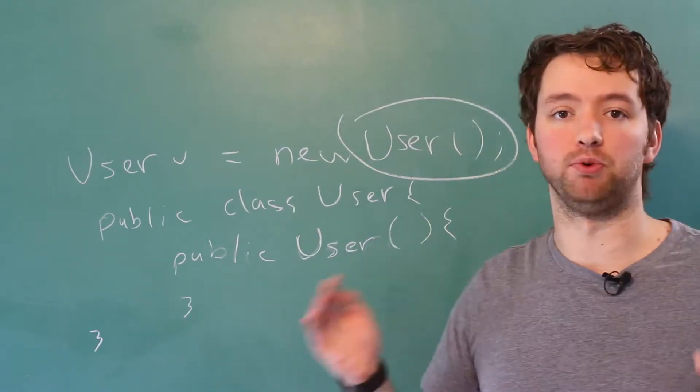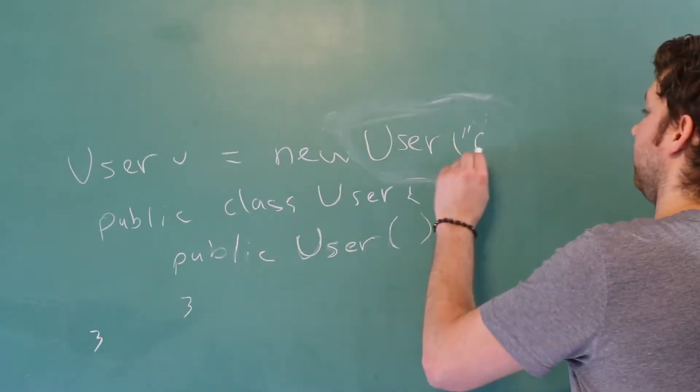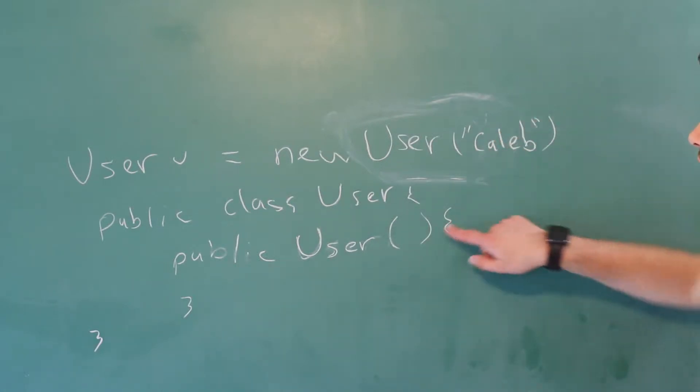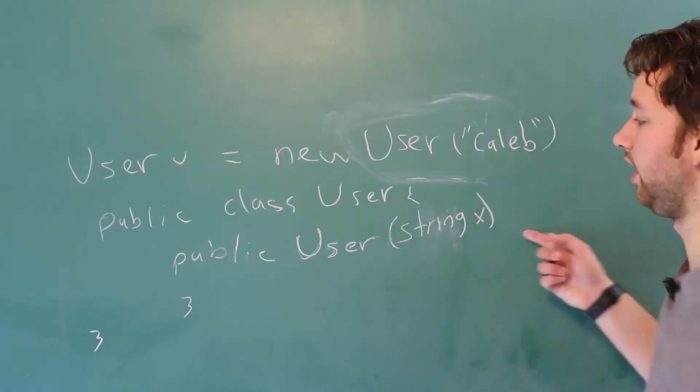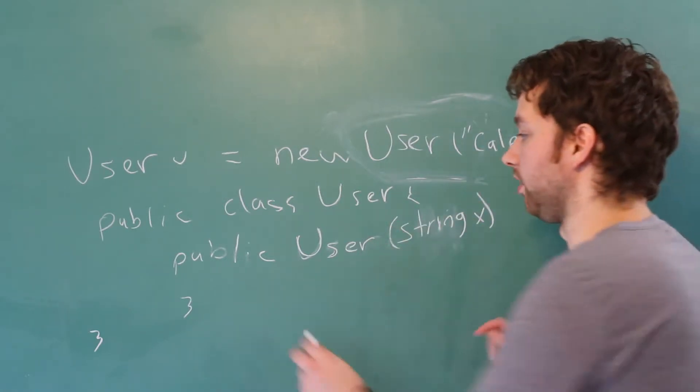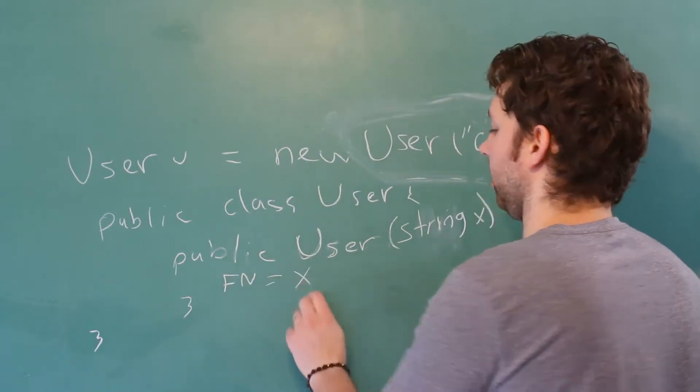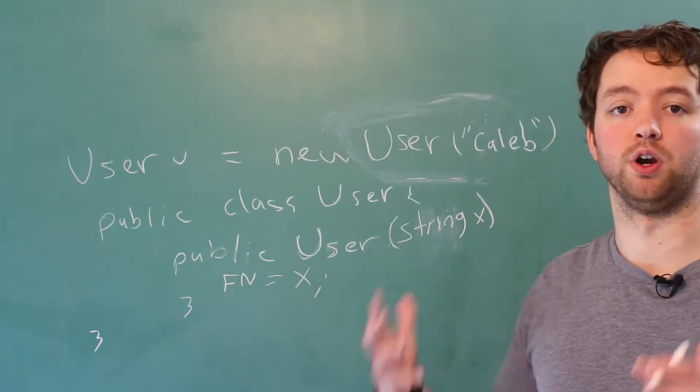So for example, we might require people to pass in their first name and last name. We'll just go with first name for now. You might pass it in like so, just passing in a string Caleb. Well, inside of this constructor, we can take that as a parameter, we'll just call it string x, and we can assign that to a property by saying first name or whatever it's called and assigning it the value x. So that is how we would get initial values for an object.